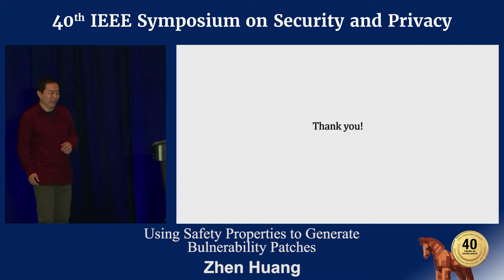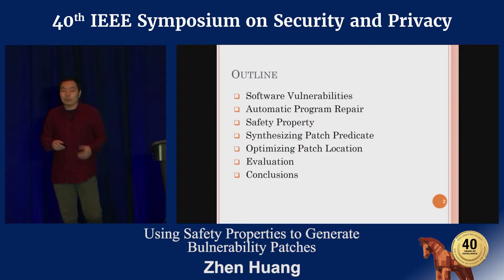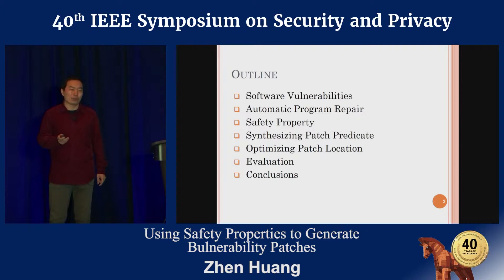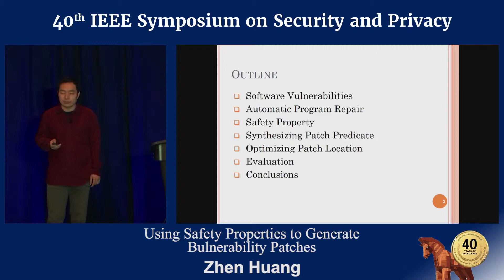Thank you so much for the introduction. In this talk, I will present our work that uses safety properties to generate vulnerability patches. First, I will discuss some background information on software vulnerabilities and automatic program repair. Then I will describe safety properties and how we use them to generate vulnerability patches, which involves synthesizing patch predicates and optimizing patch location. Lastly, I will present our evaluation results and conclude.